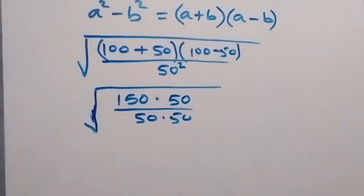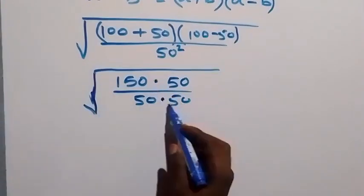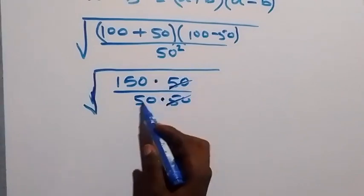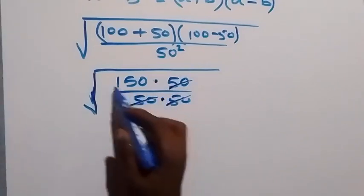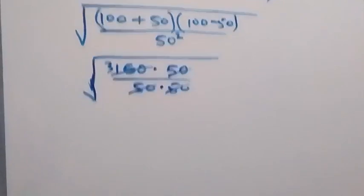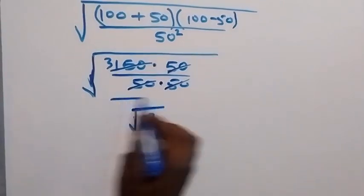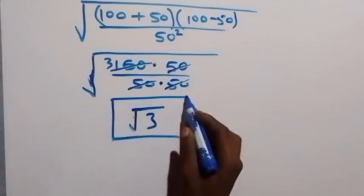Then, since this multiplies and divides, 50 cancels out. Then we have 150 over 50, that's 3. So simply, the solution here is just √3. And here we have the solution to this problem.